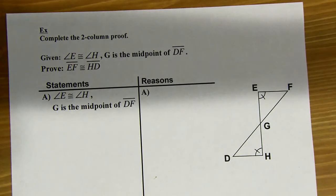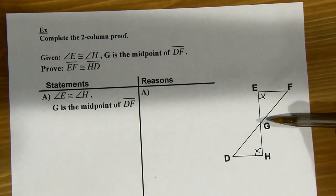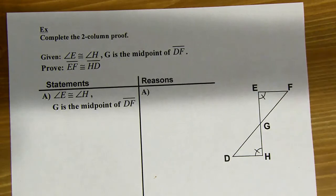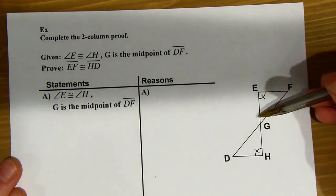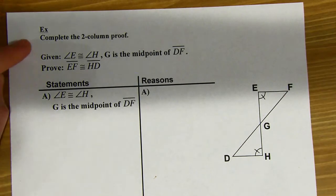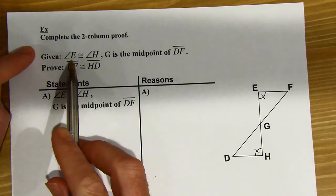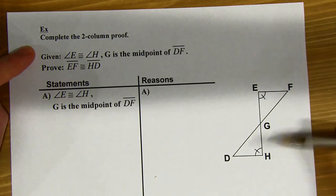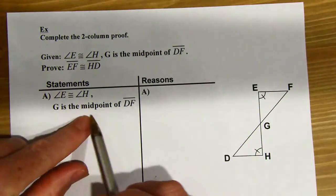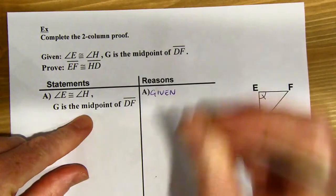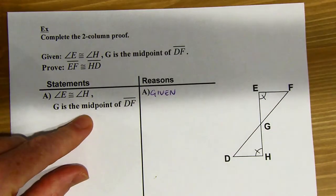Let's move on to the next page. I can see I've got my bow tie situation here — intersecting lines — and that always makes me think I'm probably going to do something with vertical angles. The given information says angle E and angle H are congruent, already marked in the picture, and that G is the midpoint of DF. The first reason is always going to be given.